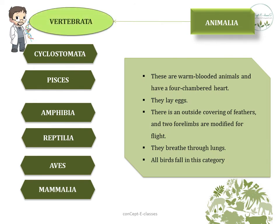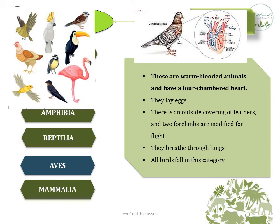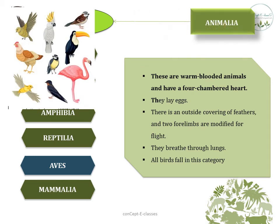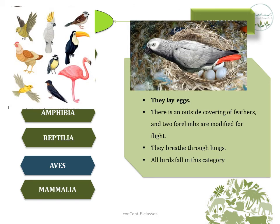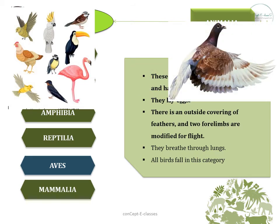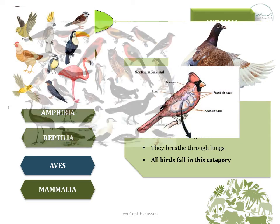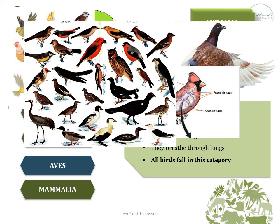The next class is Aves. These are warm-blooded animals with a four-chambered heart. They lay eggs and have an outer covering of feathers. They have two forelimbs called wings for flying. They breathe through their lungs. All birds fall into this category.